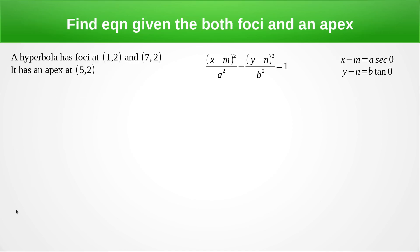For our next example, let's find the equation when we know the foci and the apex. So again, we're going to find the centre because the centre is going to be midway between the two foci. So the centre must be at 4, 2, just the average of these two points.